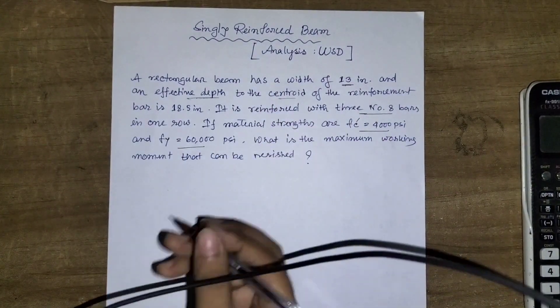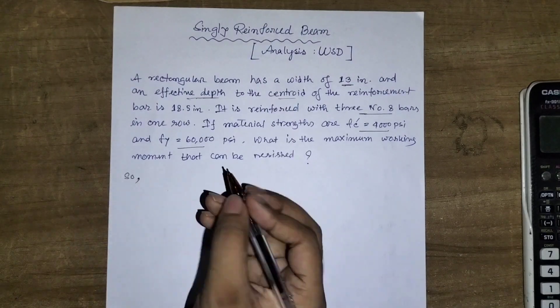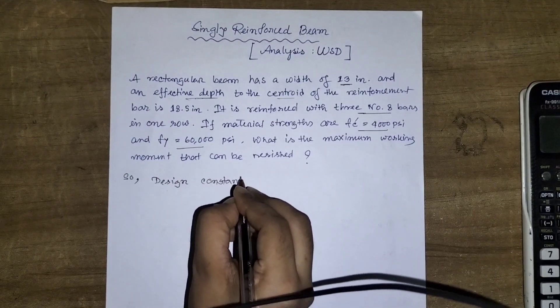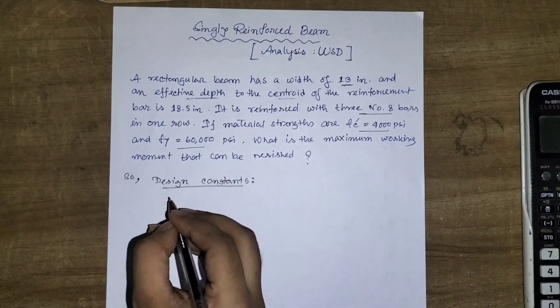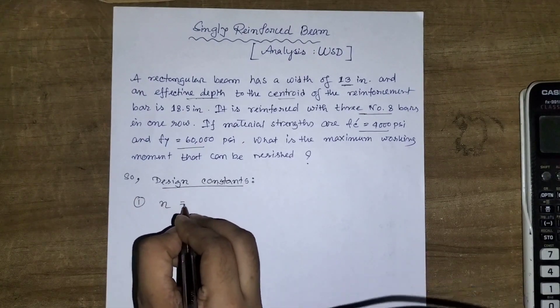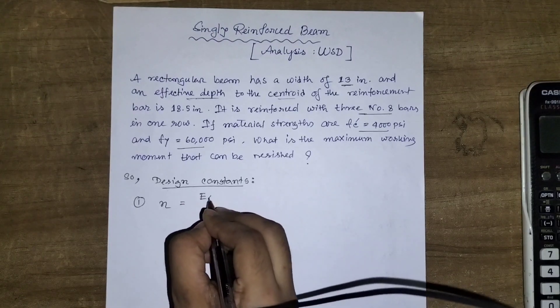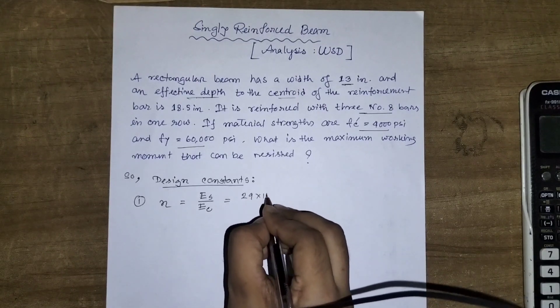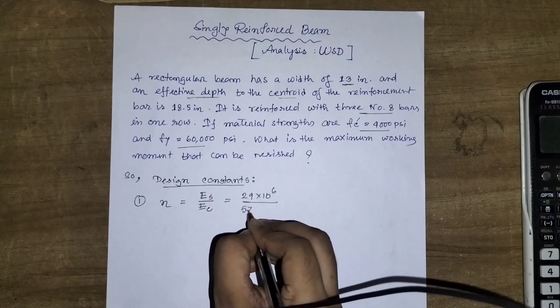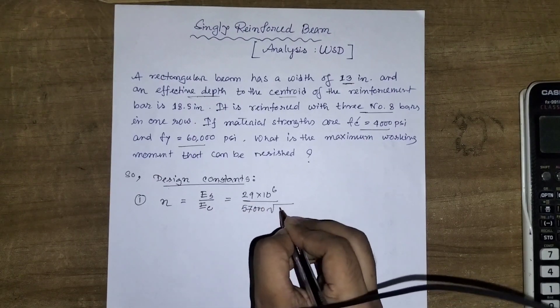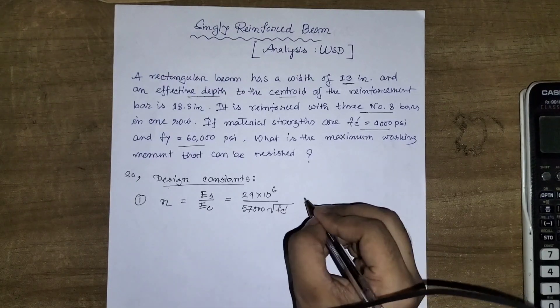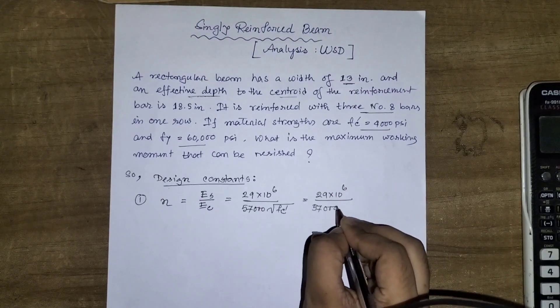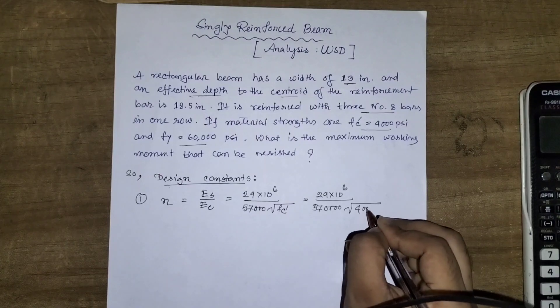Let's start with the design constants. First, we calculate n, the modular ratio. The n value is E_s divided by E_c. So E_s is always 29 times 10 to the power 6 divided by E_c. E_c value is 57,000 root over f'c prime. So we can calculate as 29 times 10 to the power 6 divided by 57,000 times square root of f'c prime which is 4000.